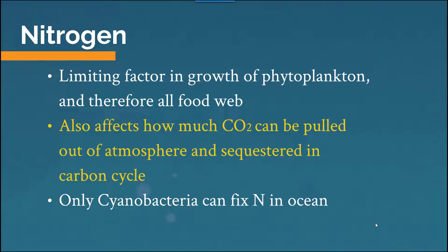Nitrogen is a limiting factor in the growth of phytoplankton and therefore the entire food web. It also affects how much carbon dioxide can be pulled out of the atmosphere and sequestered in a carbon cycle — a rotation of carbon between different organisms and parts of the ocean. Only cyanobacteria are able to fix nitrogen in the ocean, so there is a real reliance on that organism to make it usable by others.